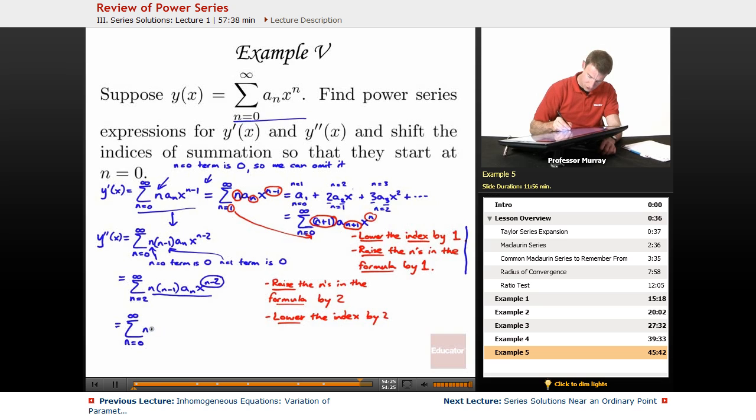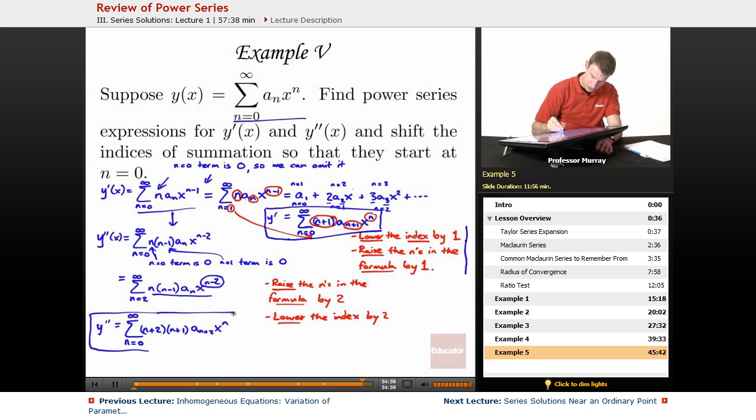I'm going to raise all of these n's by 2. I'll have n turns into n plus 2, n minus 1 raise it by 2 gets to n plus 1, a sub n becomes a sub n plus 2, x to the n minus 2 becomes x to the n. Let me box what I've figured out here. y prime is n equals 0 to infinity of n plus 1 a n plus 1 x to the n. y double prime is n equals 0 to infinity n plus 2 times n plus 1 times a n plus 2 times x to the n.